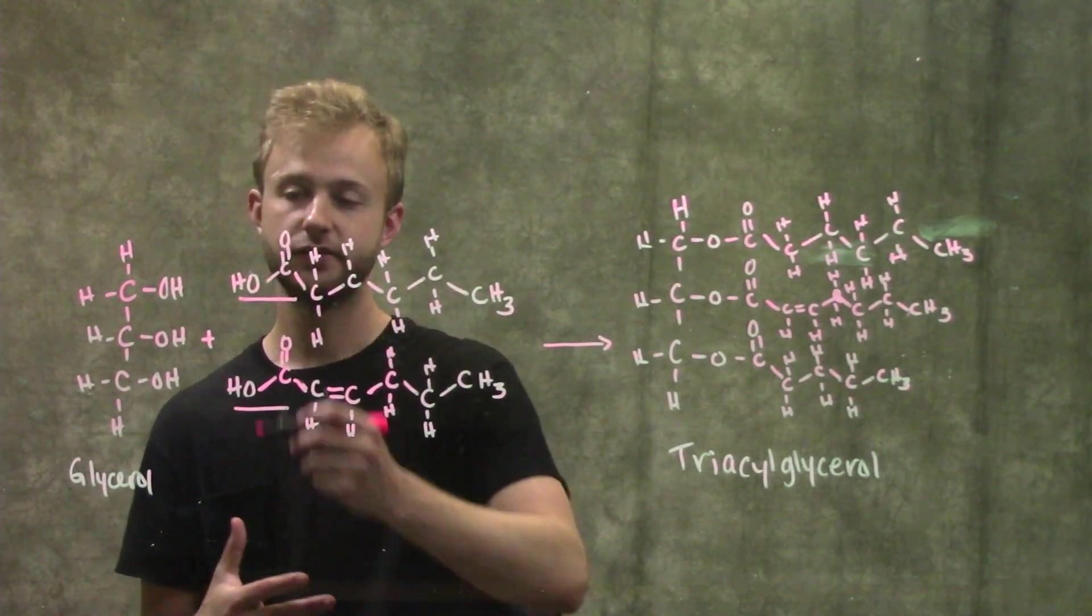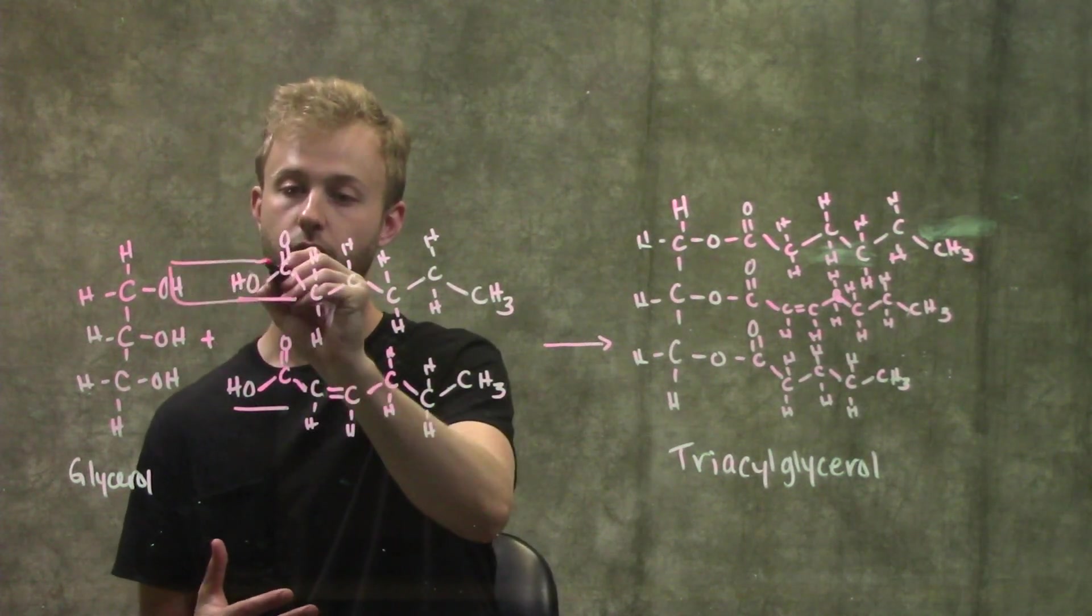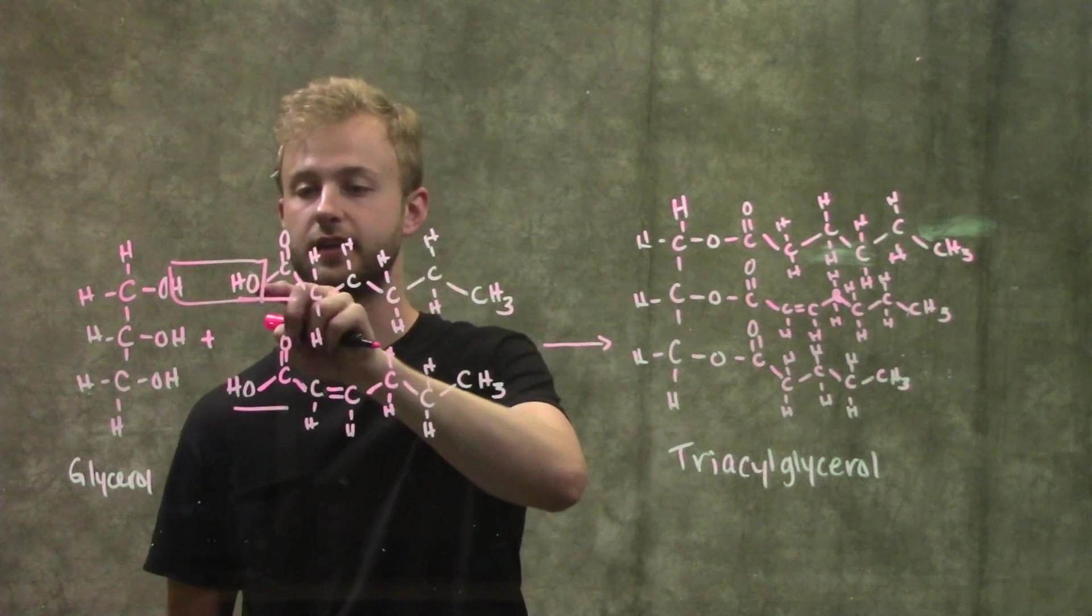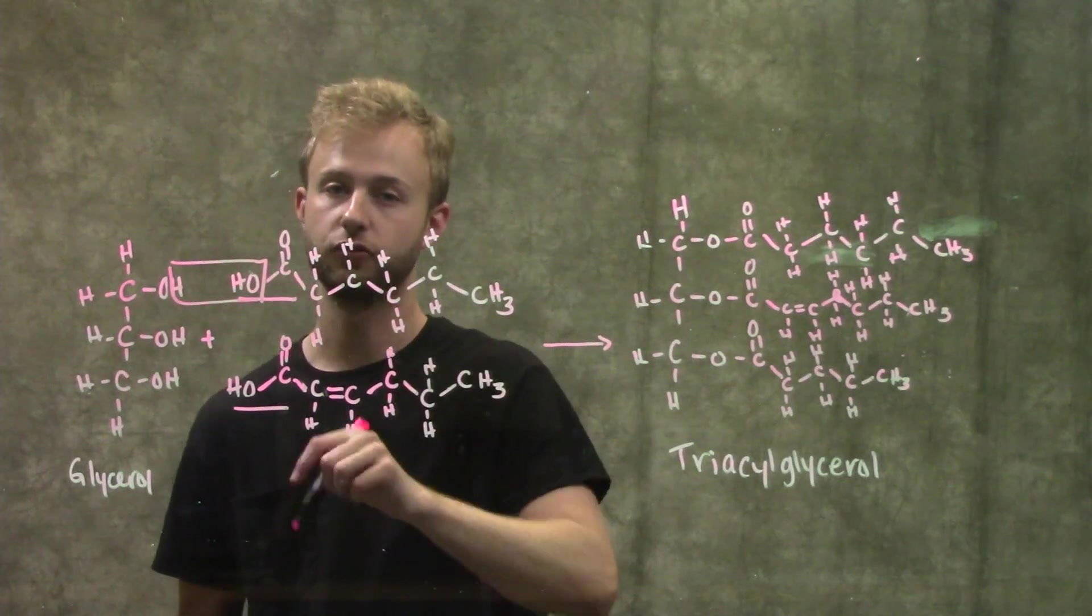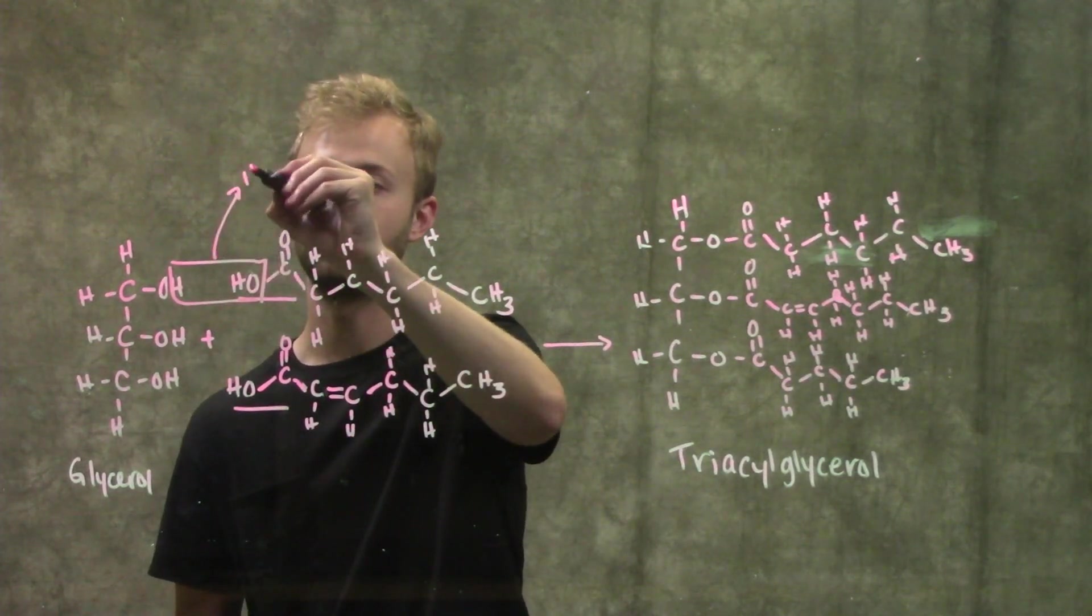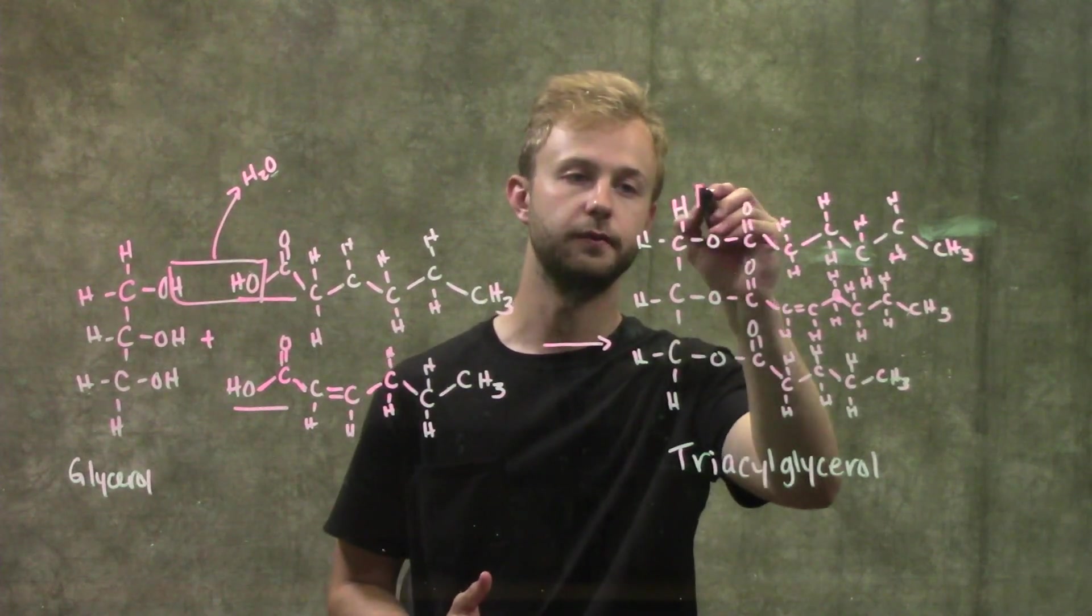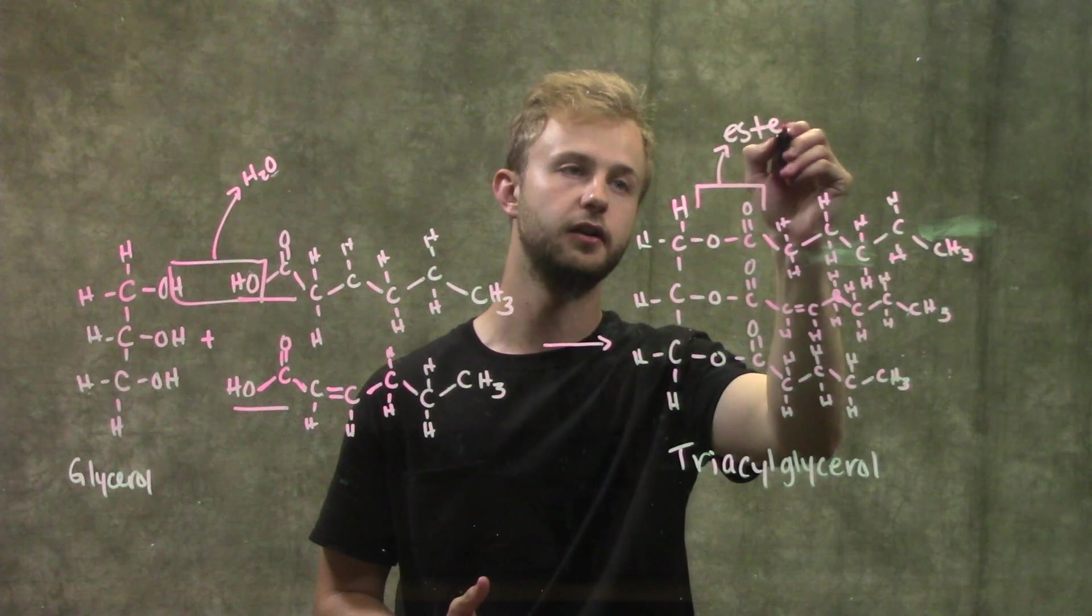So how does this happen? This is going to happen through a dehydration reaction or also a condensation reaction. We're going to take the hydroxyl group from the fatty acid and then the proton from the hydroxyl group on the glycerol and pull out a water molecule. When we do that, we're going to form something that we can see right here, which is called an ester linkage.